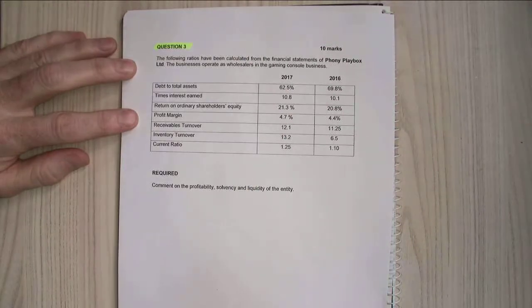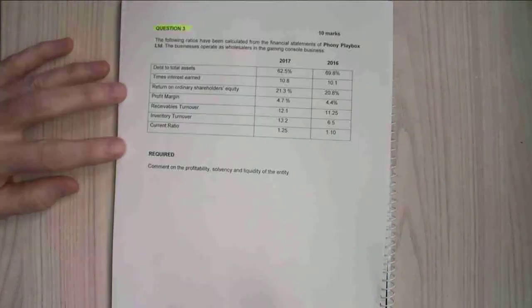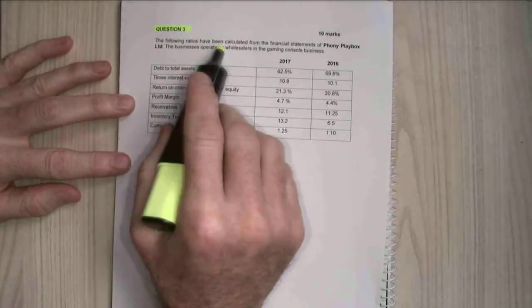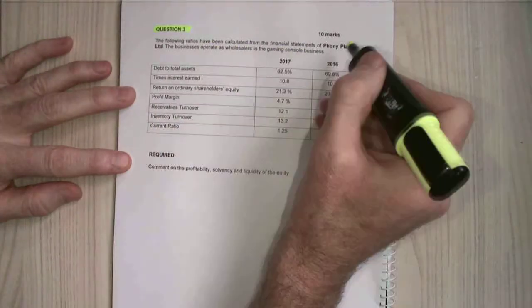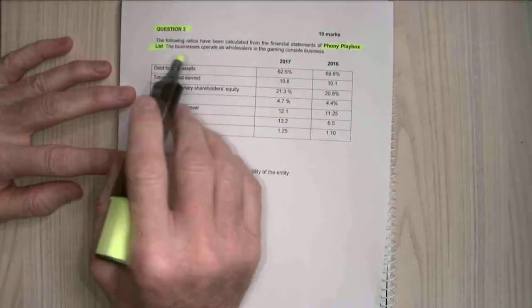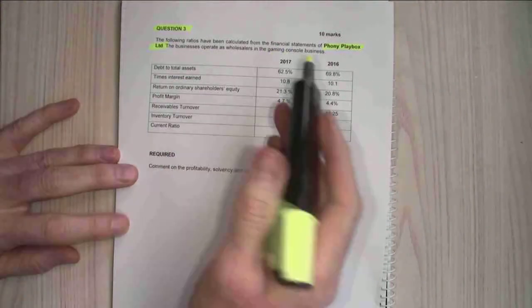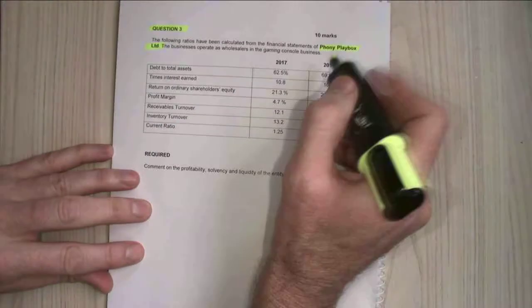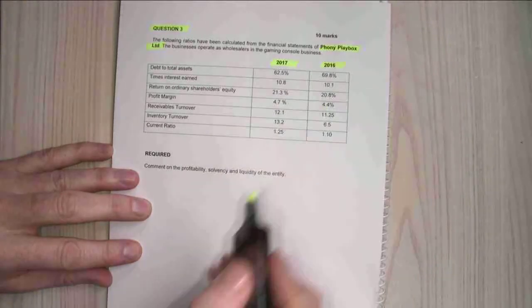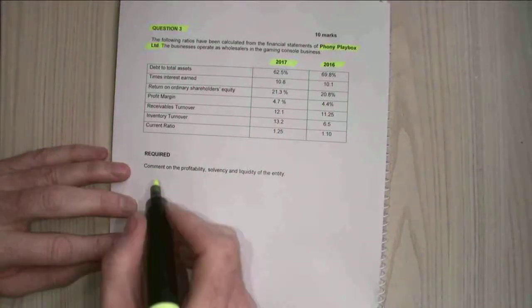Q3 or question 3 in the exam paper. The following ratios have been calculated from the financial statements of Phony Playbox Limited. The business operates as a wholesaler of gaming consoles and we're given some information from 2016 and 2017.